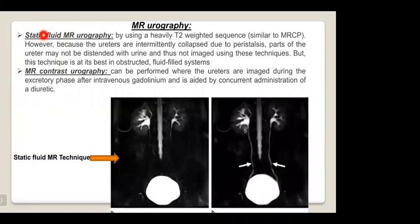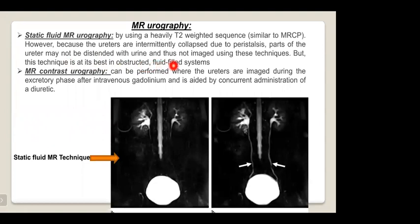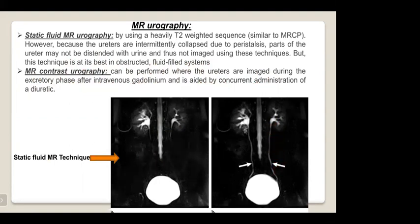MR urography has two techniques. Static fluid MR urography uses heavily T2-weighted sequences similar to MRCP; however, because the ureter intermittently collapses due to peristalsis, parts may not be visible — this technique is best for obstructed or fluid-filled systems. MR contrast urography images the ureter during the excretory phase after intravenous gadolinium, aided by concurrent administration of a diuretic, giving a clearer depiction of the ureteric course.